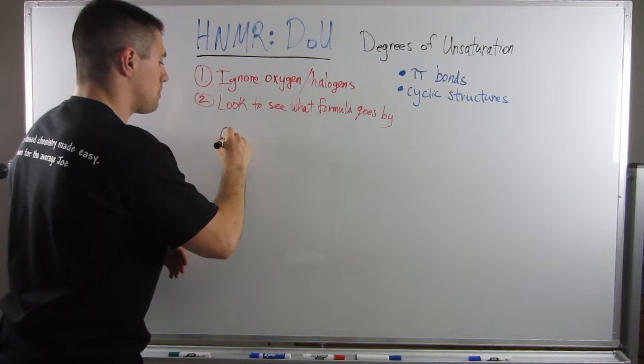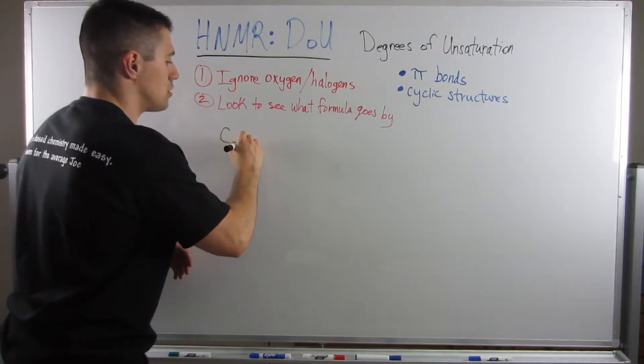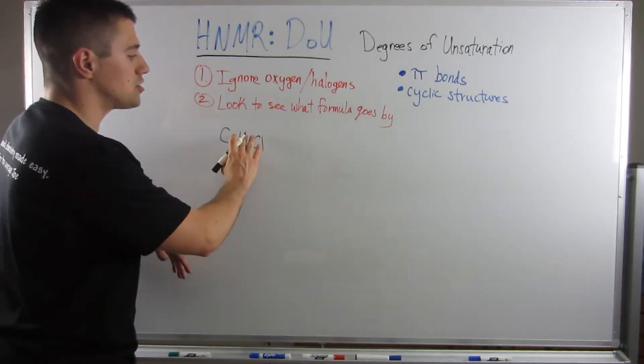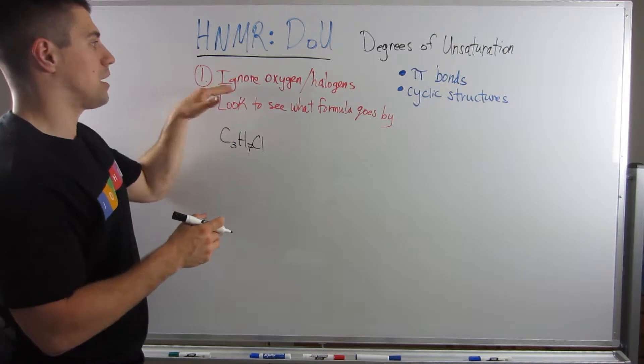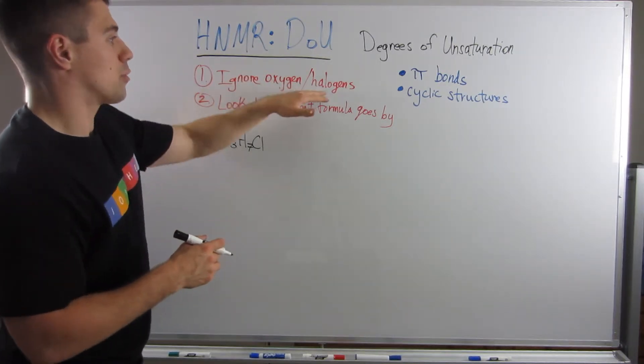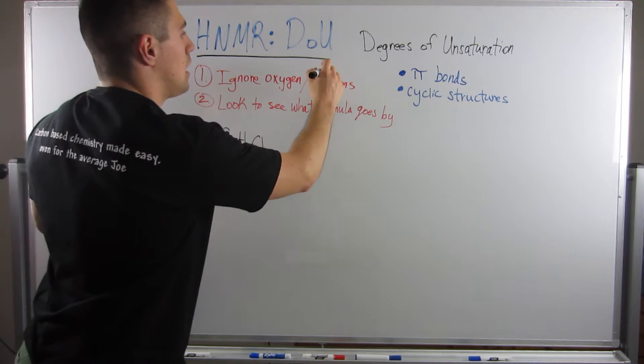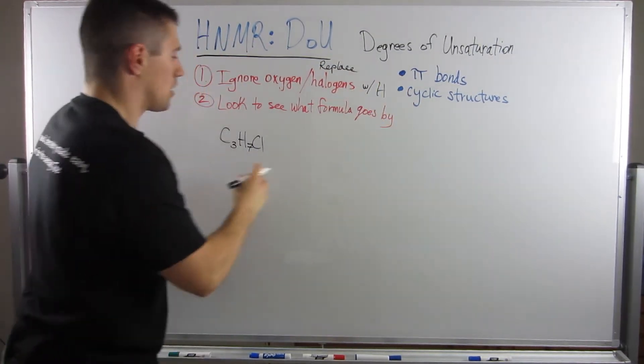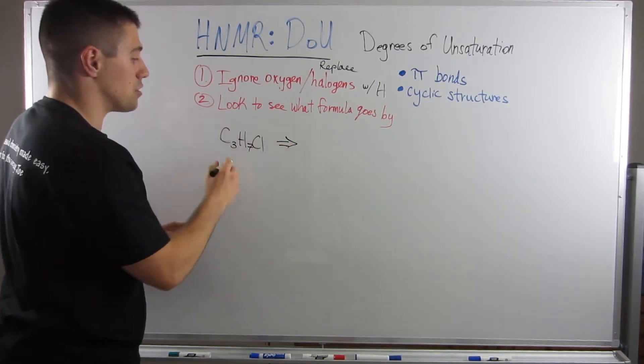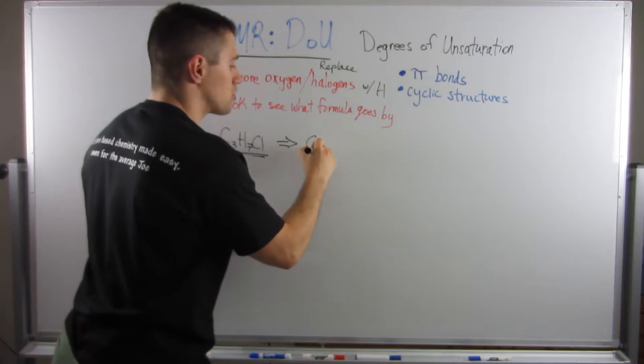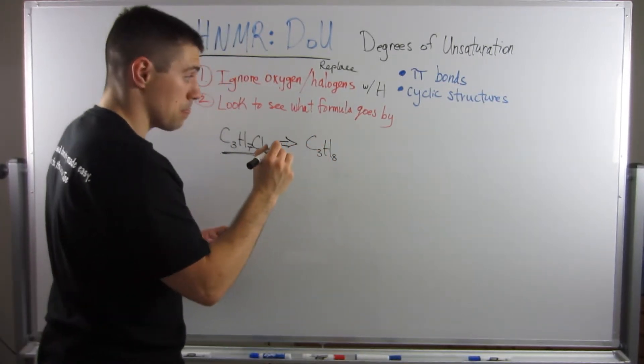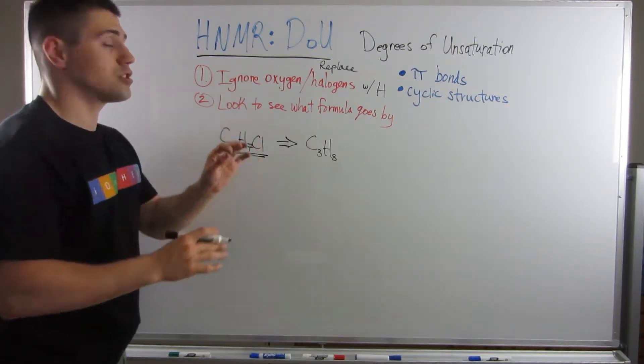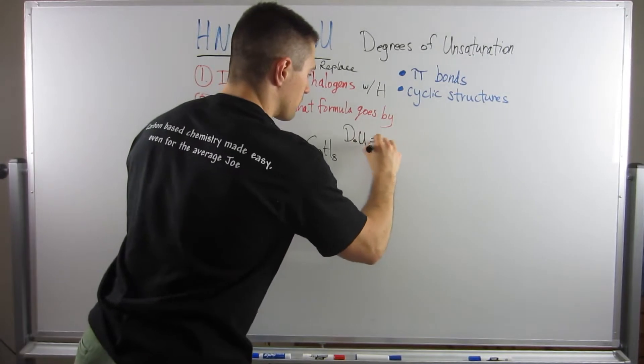Okay, so there are really two rules of thumb when you're starting out NMR. What we're going to say is ignore oxygen and halogens, then look to see what formula it goes by. So if I gave you guys C3H7Cl, right? What I mean by ignore oxygen and halogens is if I just ignore the Cl and replace it with a hydrogen. Then I'll say to myself, oh, that's the formula of an alkane. So my degrees of unsaturation would be zero.